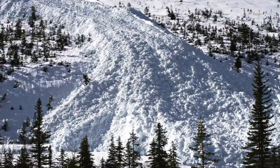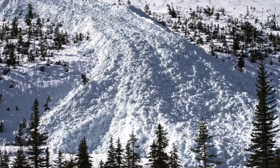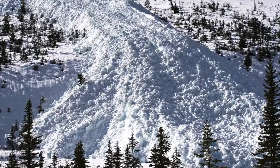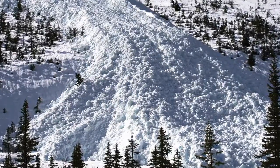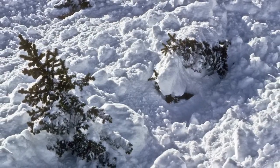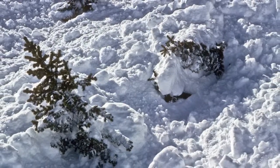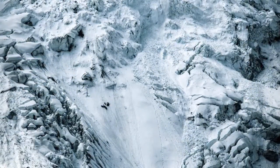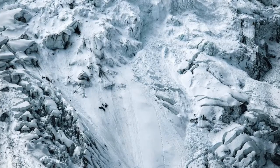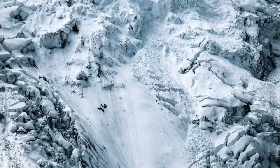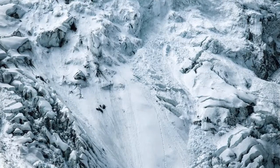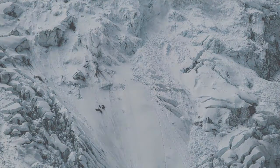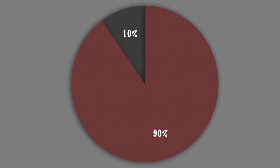A natural avalanche can be set off by increased precipitation, snow weakening, earthquakes, rockfalls, icefalls, snowfall, erosion, and metamorphic changes in the snow pack such as melting due to solar radiation.